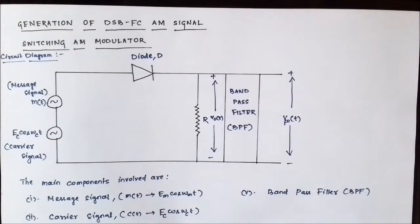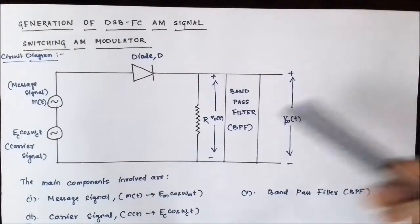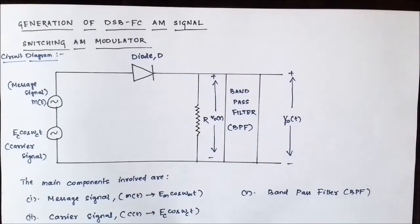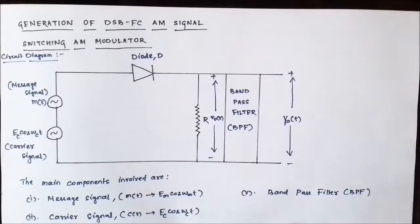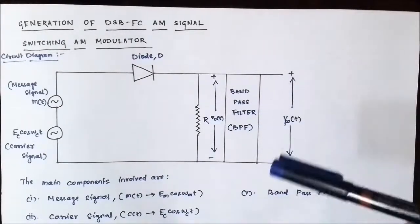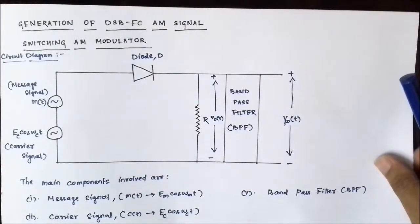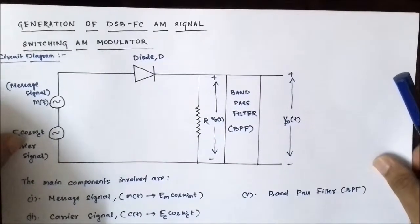Hello friends, welcome to Engineering Tutorial. In my previous video related to amplitude modulation, I discussed about the generation of a double sideband full carrier signal using a square law modulator. A double sideband full carrier signal consists of the carrier signal and both the sidebands — the lower and the upper sidebands. I recommend you go through that video so that you understand this video in a better way. Today we are going to discuss about the switching AM modulator method for generation of a double sideband full carrier amplitude modulated signal.